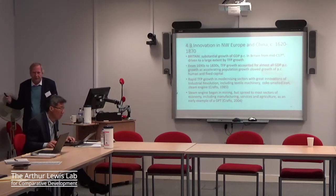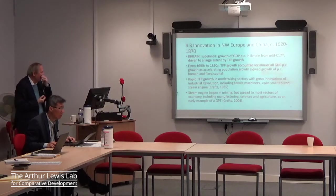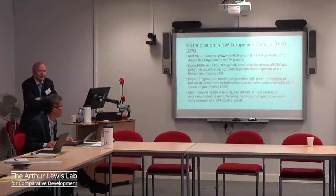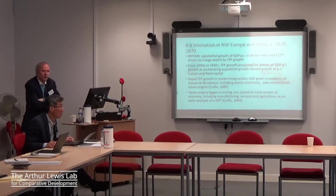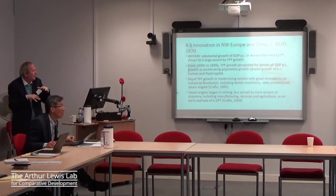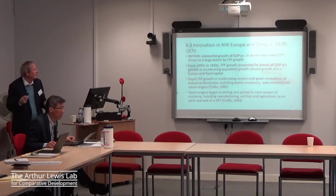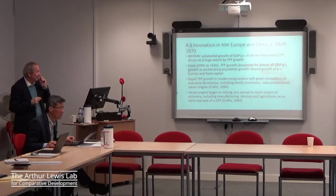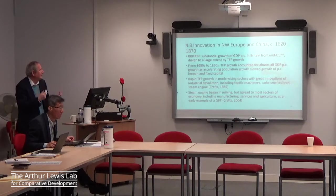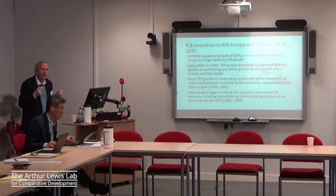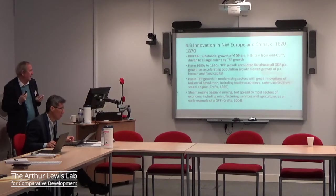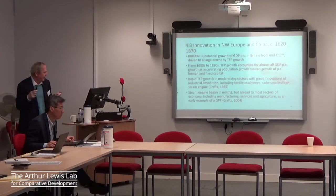Why didn't China go on to achieve a full-fledged scientific and industrial revolution? There are big debates about this. Justin Lin argues China was doing very well in technological inventions requiring just experience and people tinkering — that's the pre-modern way. They never made the transition to experimental science-based innovation which tends to dominate the modern world. The last period, 1620 to 1870: the key player here is Britain, with rising GDP per capita, quite strong growth of almost 1% per year in the second half of the 17th century, driven to a large extent by TFP growth.